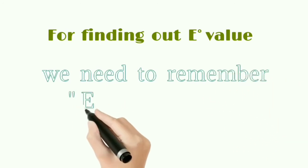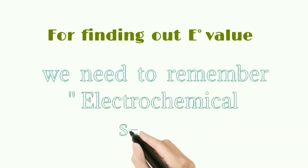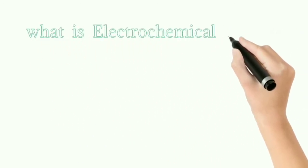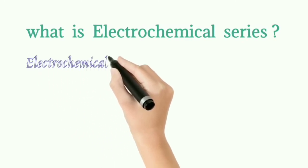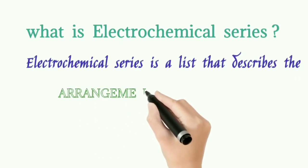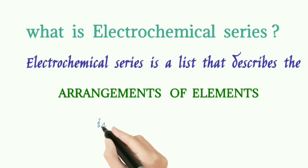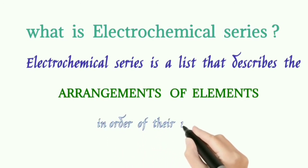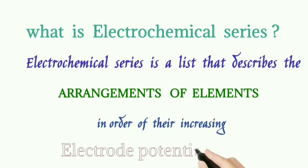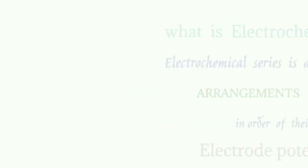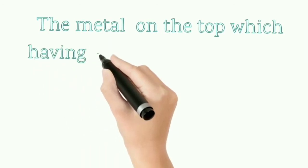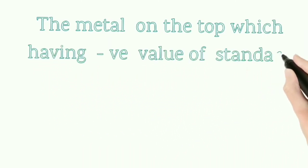For finding out the E° value, we need to remember the electrochemical series. The electrochemical series is a list that describes the arrangement of elements in order of their increasing electrode potential. We should divide it into above hydrogen and below hydrogen.